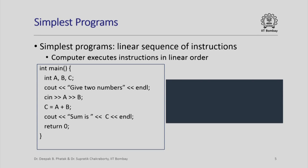The simplest programs we can write are basically a linear sequence of instructions and the computer executes these instructions in the same linear order in which they appear in the program. For example, on the left pane here you can see our friendly summing program which reads two integers, adds them up and prints the sum out on your screen. On the right hand side I have shown the computer screen as it might appear as the instructions in this program are executed sequentially.